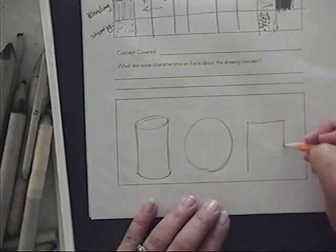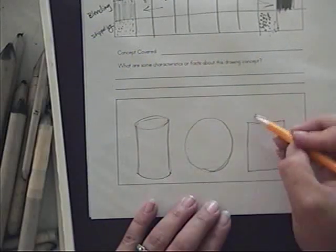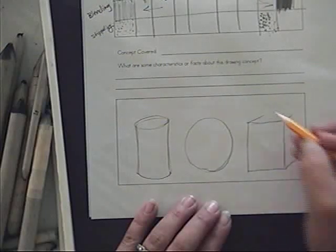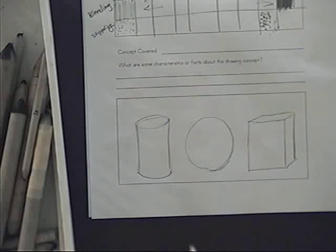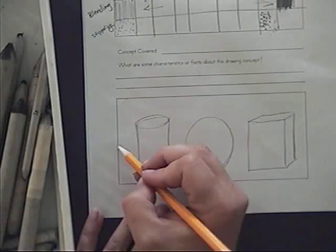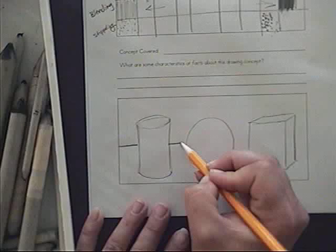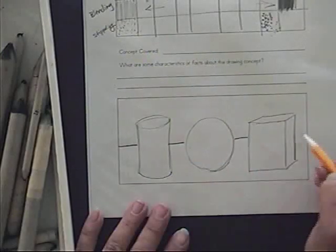You can draw those right now. So a square, diagonal lines, and then the back line. Behind that, I want you to put a line, a horizon line. Let's see right there.